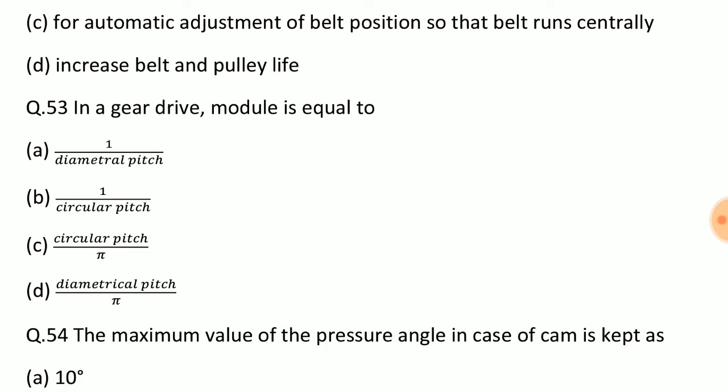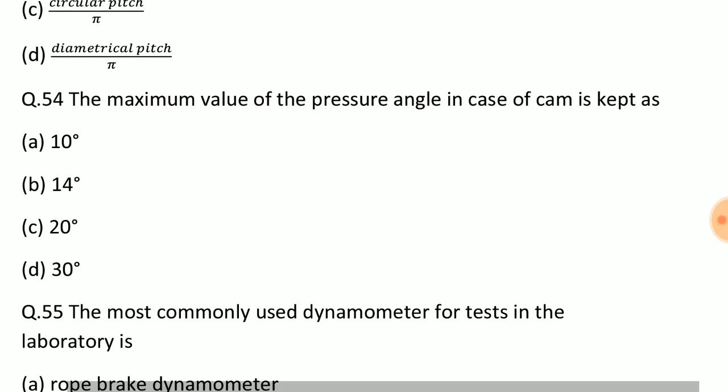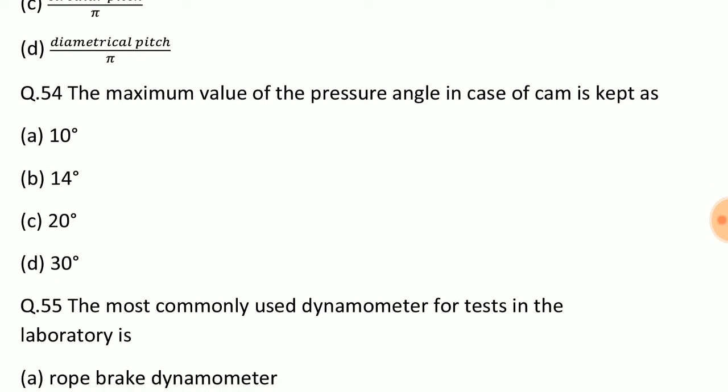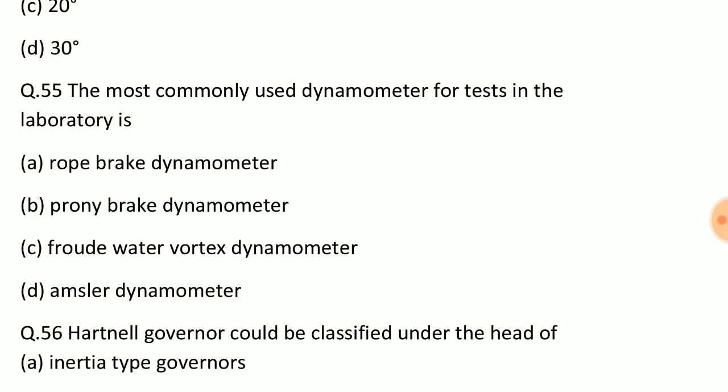Question: In a gear drive, module is equal to? Answer: Option A, one upon diametral pitch. Question: The maximum value of the pressure angle in case of cam is kept as? Answer: Option D, 30 degrees. Question: The most commonly used dynamometer for testing in the laboratory is? Answer: Option B, Prony brake dynamometer.